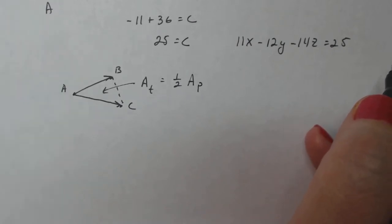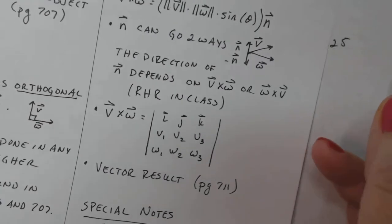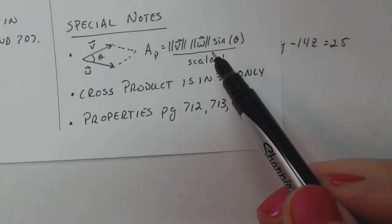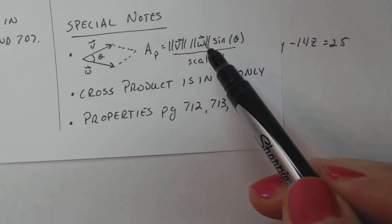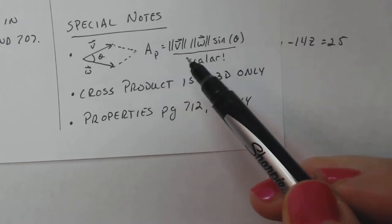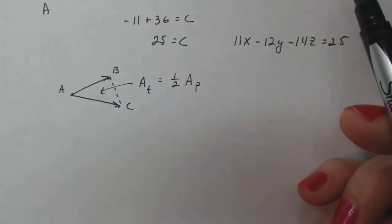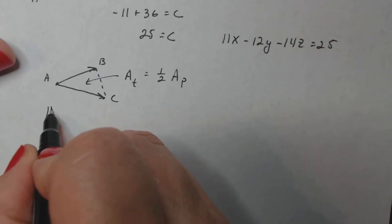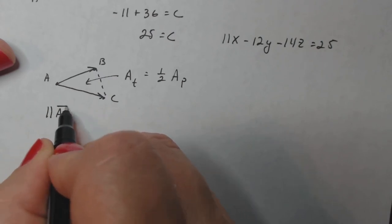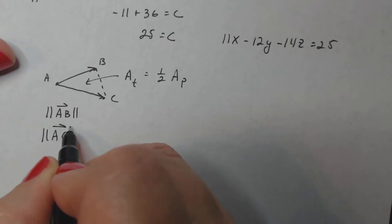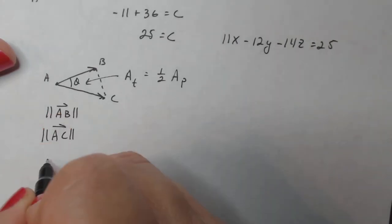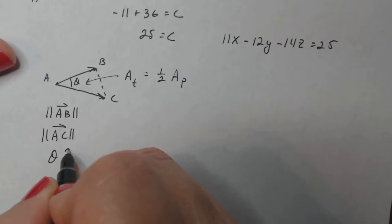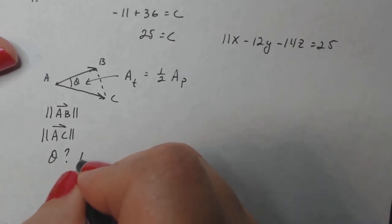Remember the area of the parallelogram is part of the cross product. So we need the magnitude of V magnitude of W sine of theta and divide that by two. And that gives me the triangle. So in this case, we need three things. We need the magnitude of AB, we need the magnitude of AC, and we need the angle between the two.